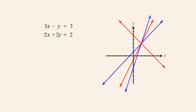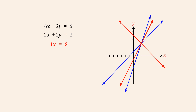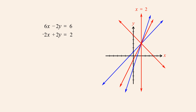Now let's see what happens if in addition to multiplying the bottom equation by negative 2, we multiply the top equation by positive 2. When we add the equations we get 4x plus 0 equals 8, or 4x equals 8, which can be written more simply as x equals 2. Just as before, this equation's graph passes through the intersection point of the original two lines, but now the resulting line is vertical. This equation is especially informative since it tells us that the x-coordinate of the intersection point is 2.